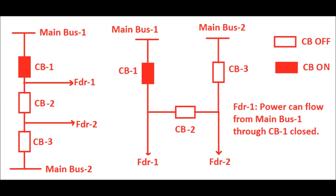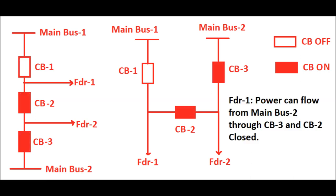How does feeder 1 get power? There are two paths: one via main bus 1 and another via main bus 2. Via main bus 1, feeder 1 can receive power through circuit breaker CB1, which is towards main bus 1, being closed. Again, feeder 1 can receive power through main bus 2 via CB3 — the circuit breaker towards the main bus 2 side — and the middle CB, that is CB2, being closed.